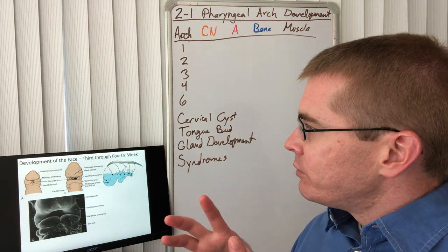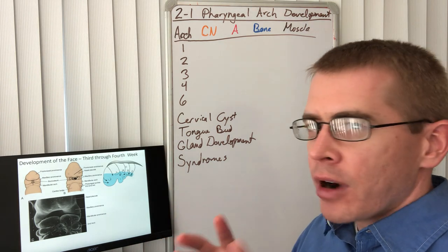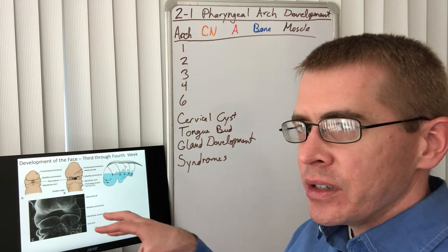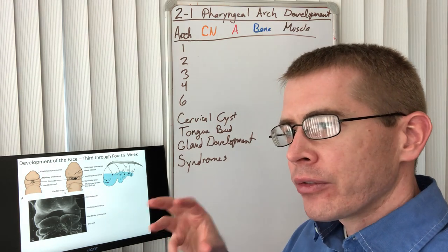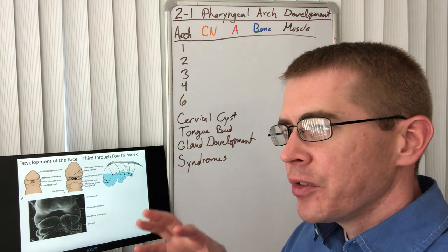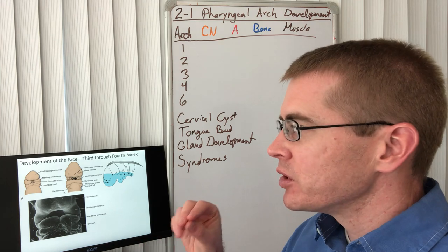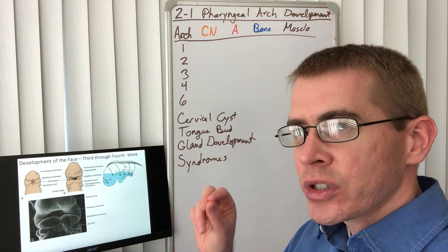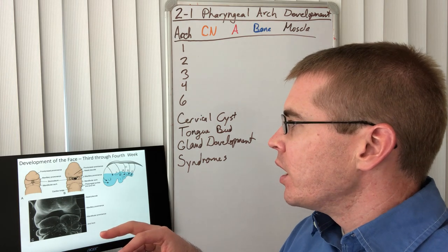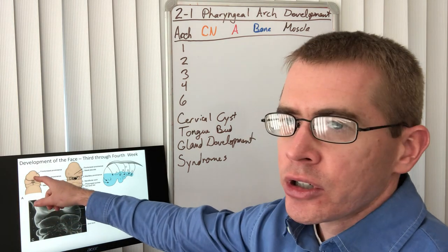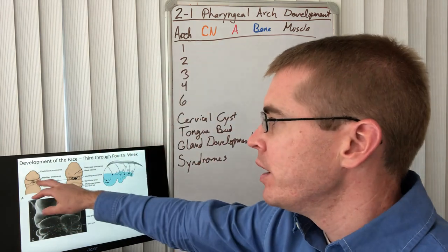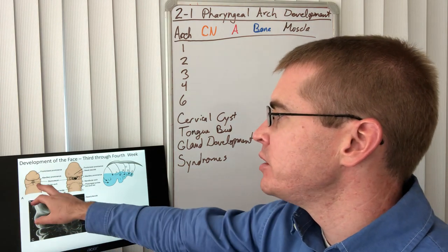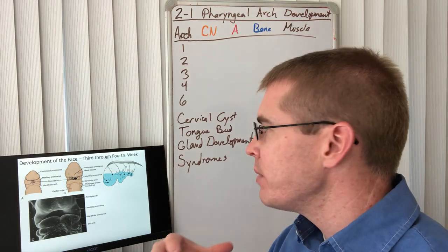So the development of the face is all about prominences. We see here different prominences that develop and enlarge, and from those prominences specific structures end up developing: specific cranial nerves, specific bones and cartilage, specific artery branches, and specific muscles. We can see here the frontonasal prominence which is going to become the forehead, the maxillary prominence that's going to become the cheek region, and then the mandibular arch forming to ultimately become the mandible.